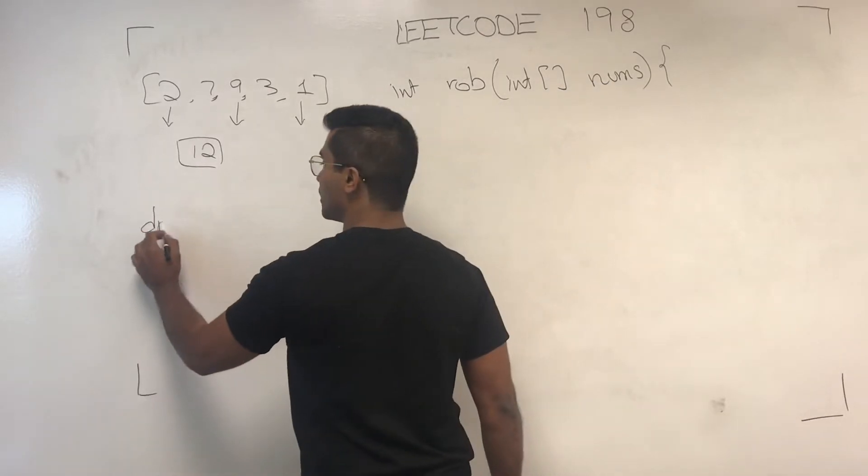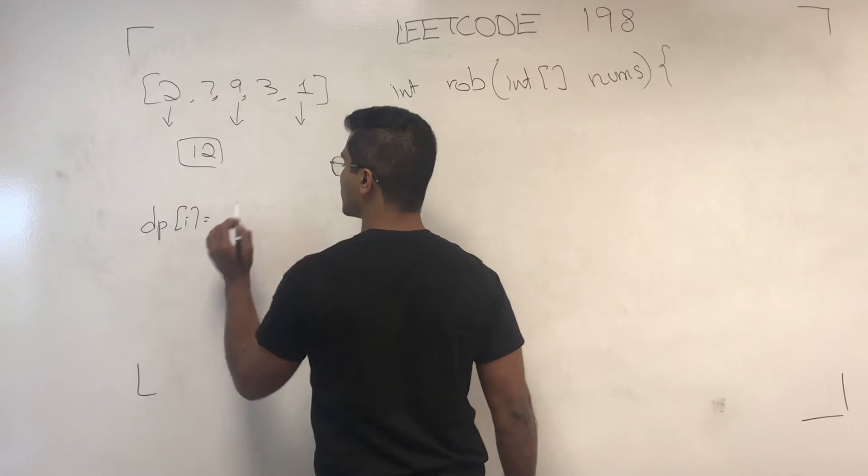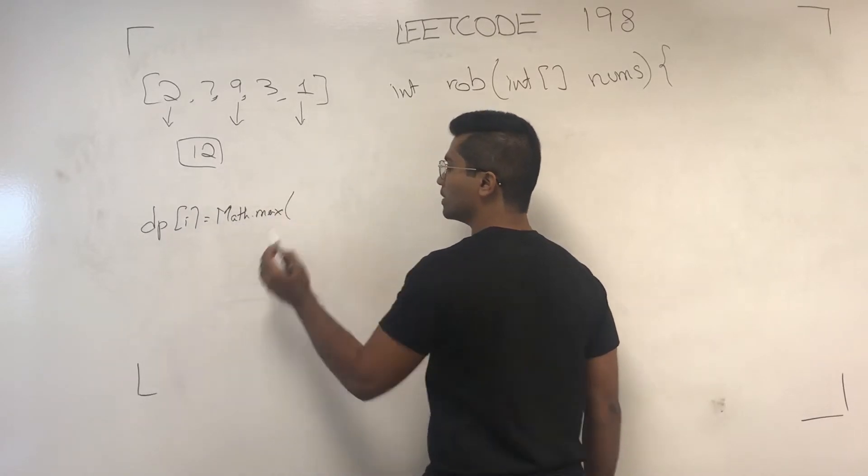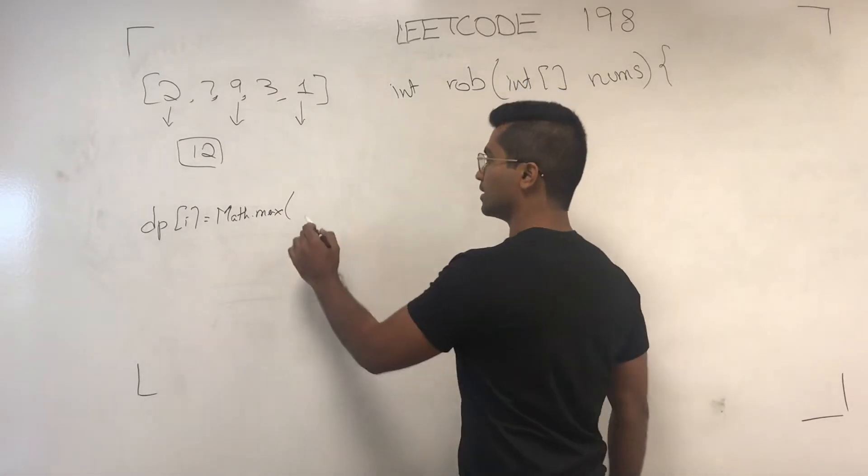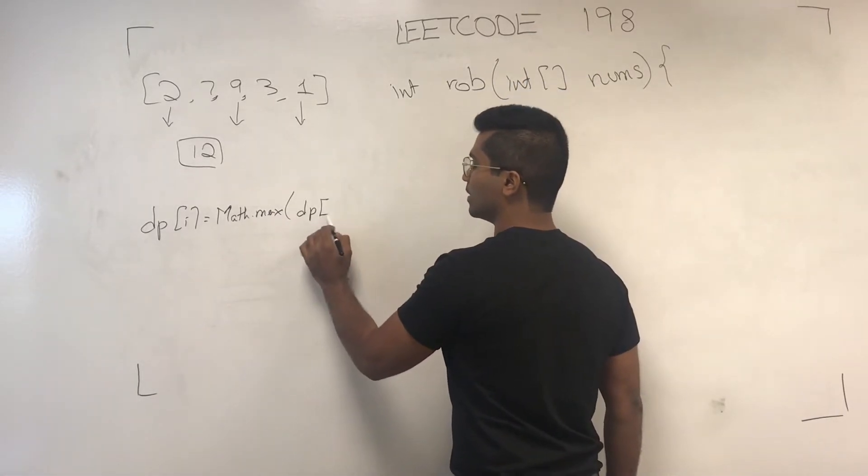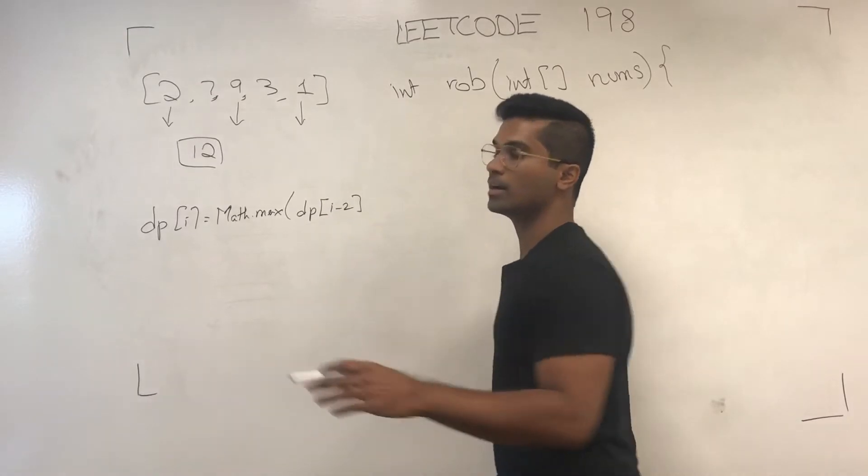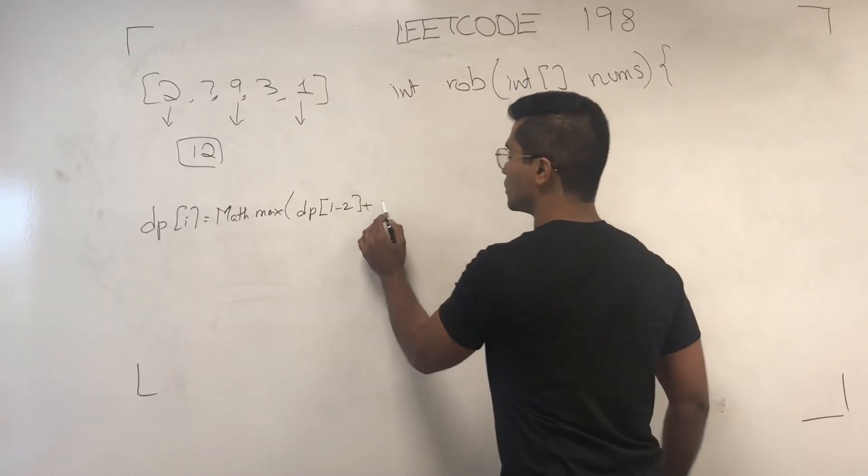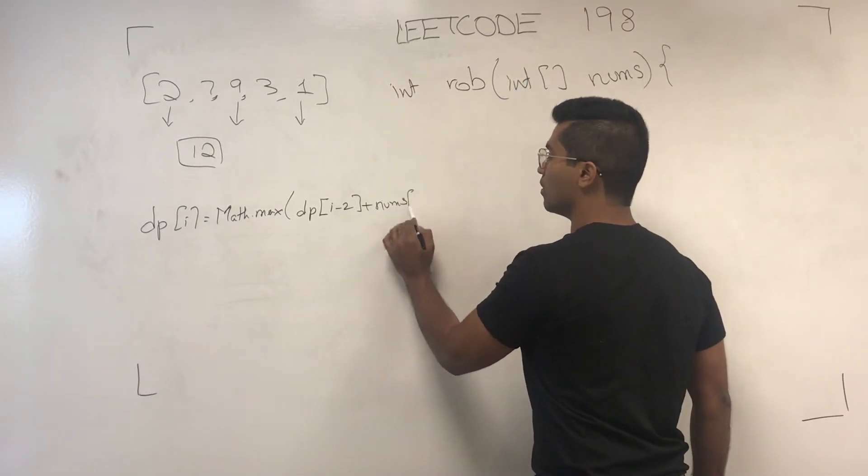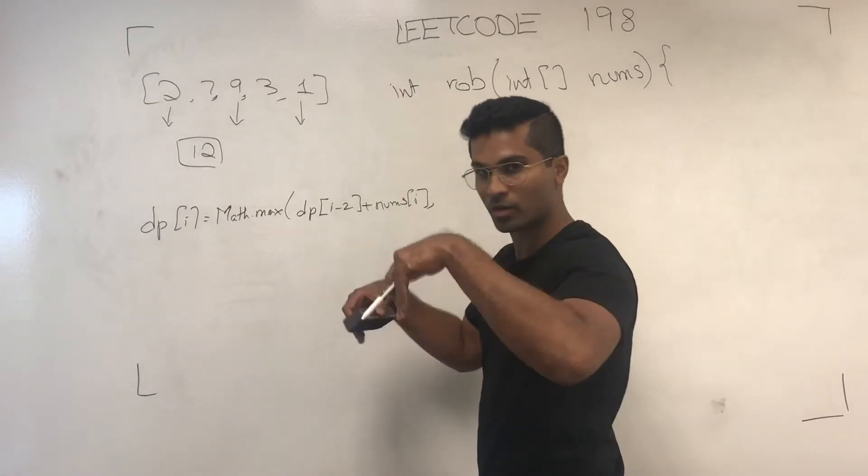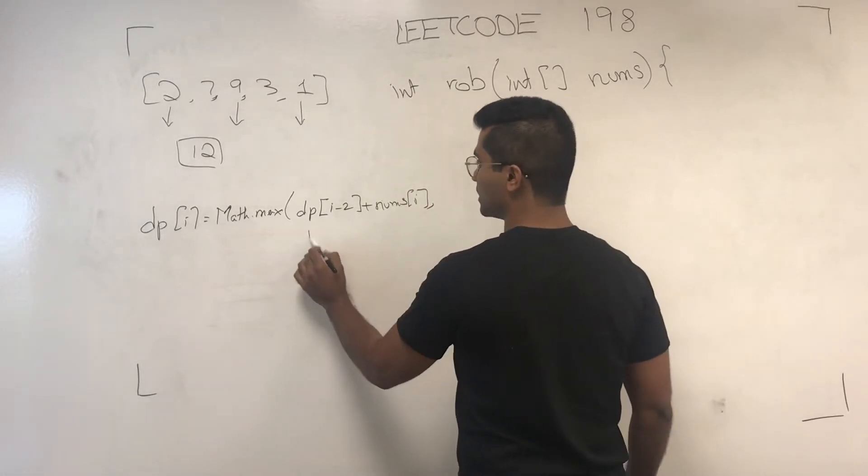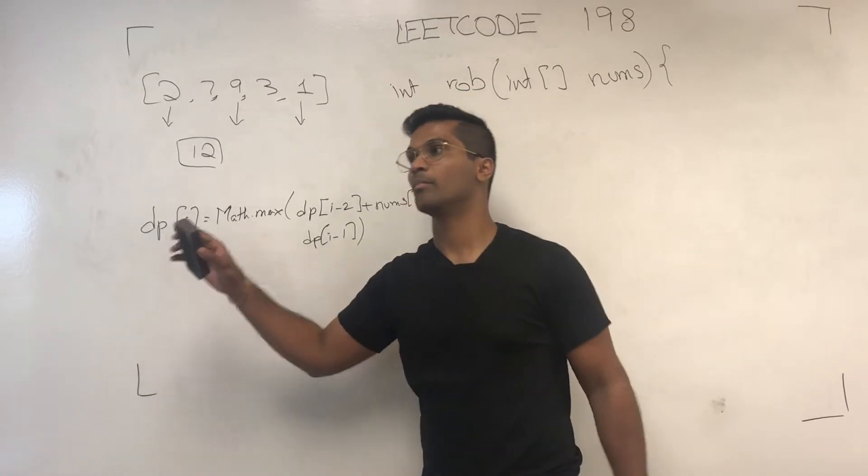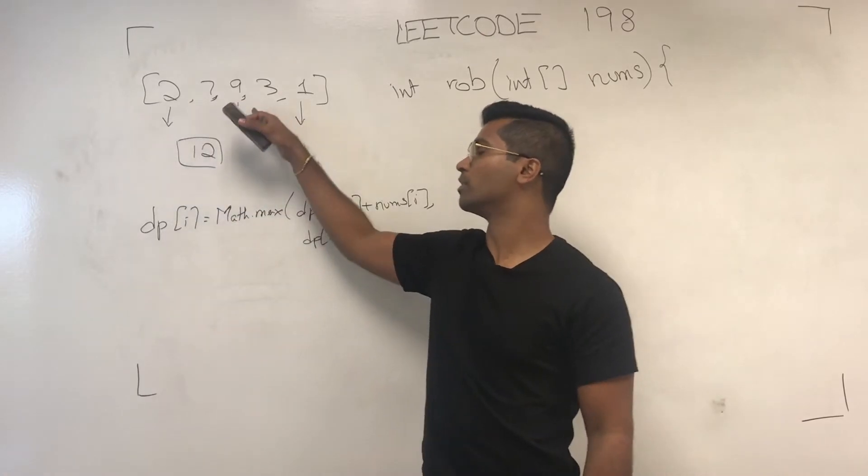So DP of i is essentially math.max of what is my DP of i minus 2, if I go two behind me and I take this house, so nums of i, or if I skip the house I'm currently at, it's going to be DP of i minus 1. Now DP is the maximum value until that one.